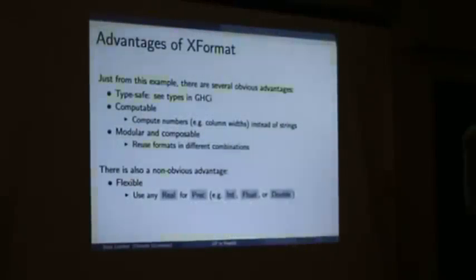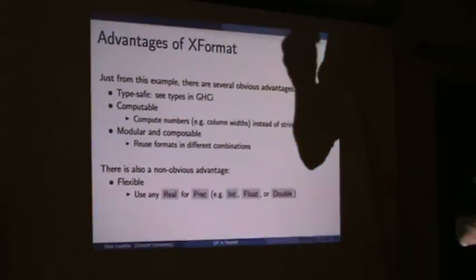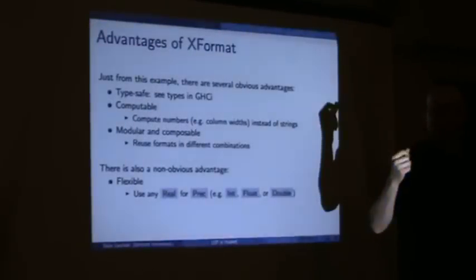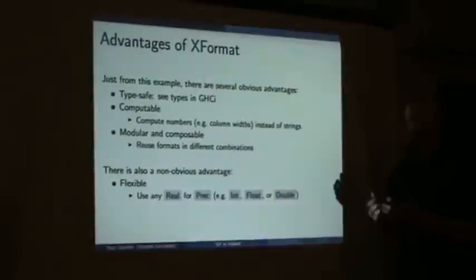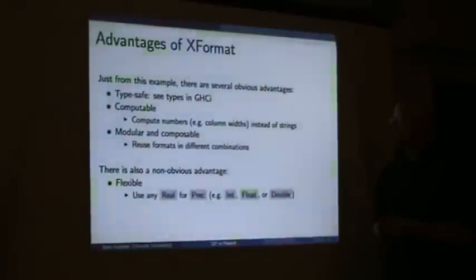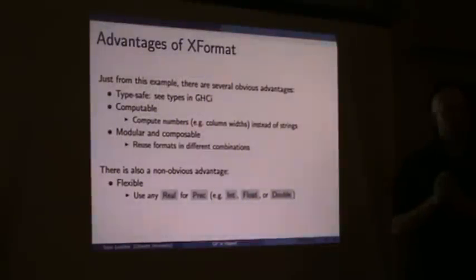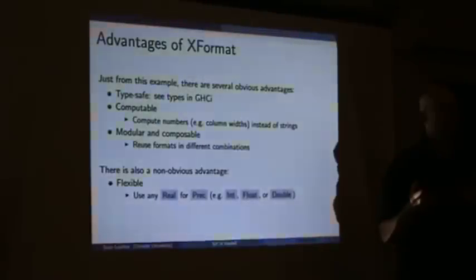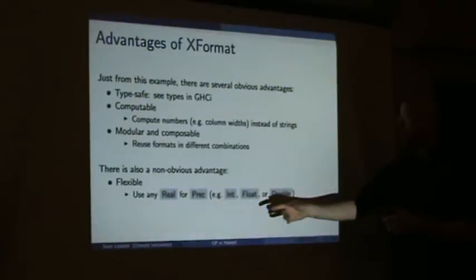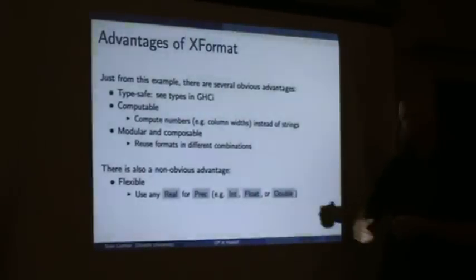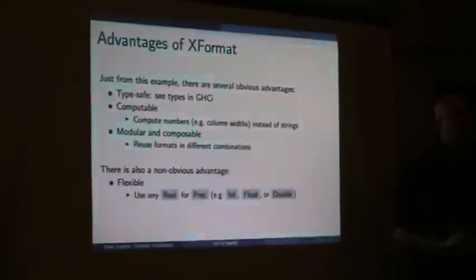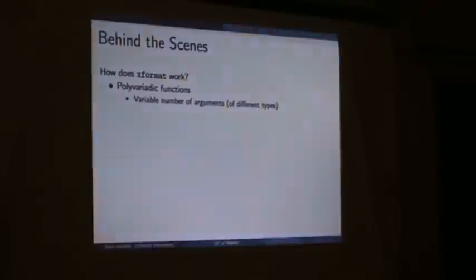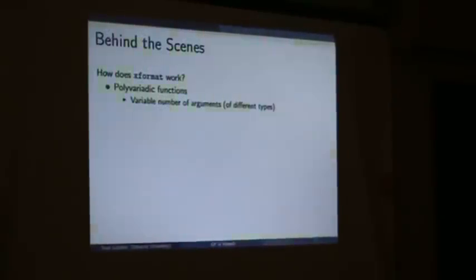There's an unobvious advantage that this example has: the prec format descriptor for precision is actually more general than the one in text.printf. In that example I specified it had to be a float — I couldn't put an integer in there, even though I might have an integer for a price. But prec uses the type class Real, which has at least the instances for Int, Float, or Double. So I can throw in these different types and it will still give me the right output. So how does it work? The first thing is polyvariadic functions — variable number of arguments.